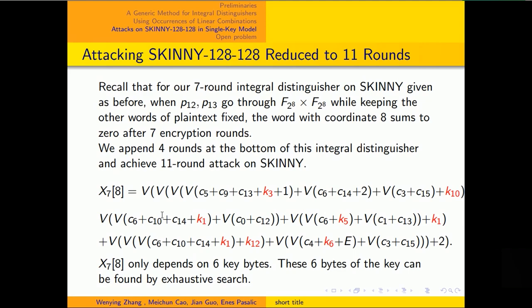The last part of this talk is the practical attack on SKINNY. Recall that for our 7-round integral distinguisher on SKINNY, when P12 and P13 go through F2^8 while keeping the other words of plaintext fixed, the word with coordinate 8 sums to zero after 7 encryption rounds. We append 4 rounds at the bottom of this integral distinguisher and achieve an 11-round attack on SKINNY.